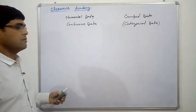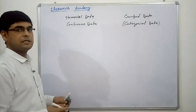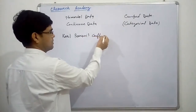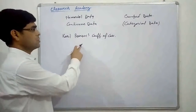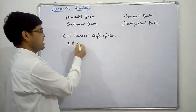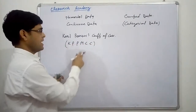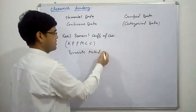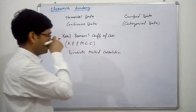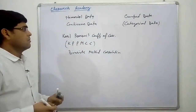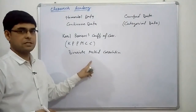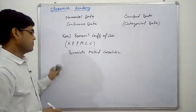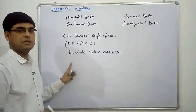If we talk about continuous data, the very commonly used method here for calculating correlation is the Pearson coefficient of correlation, also known as the Pearson product-moment coefficient of correlation, as well as the bivariate method of correlation. Pearson's coefficient of correlation is useful in statistics for measuring the level or degree of relationship between two continuous variables.